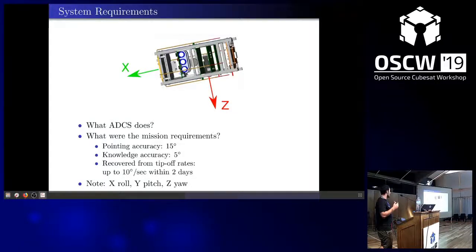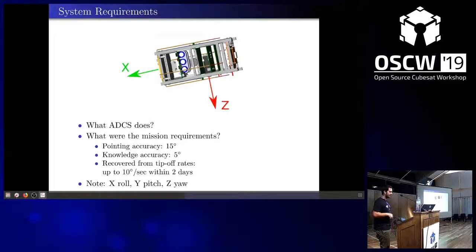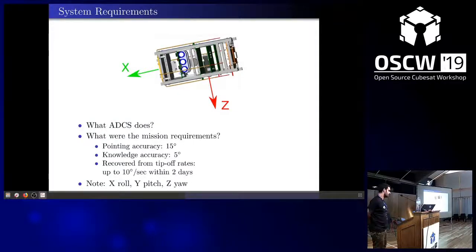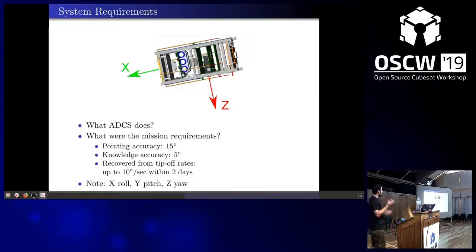It needs to know about the determination — the angular velocities. The mission requirements include a pointing accuracy of 15 degrees, a knowledge accuracy of 5 degrees, and recovery from tip-off rates up to 10 degrees per second within two days.